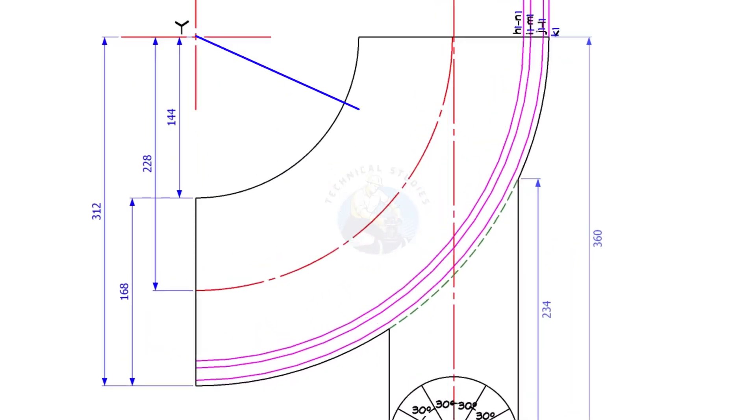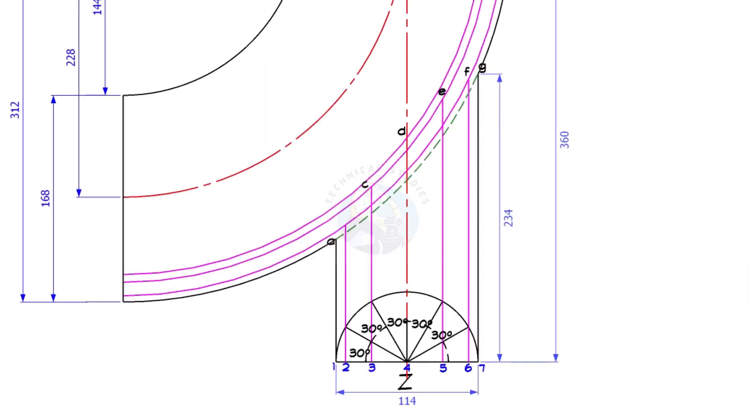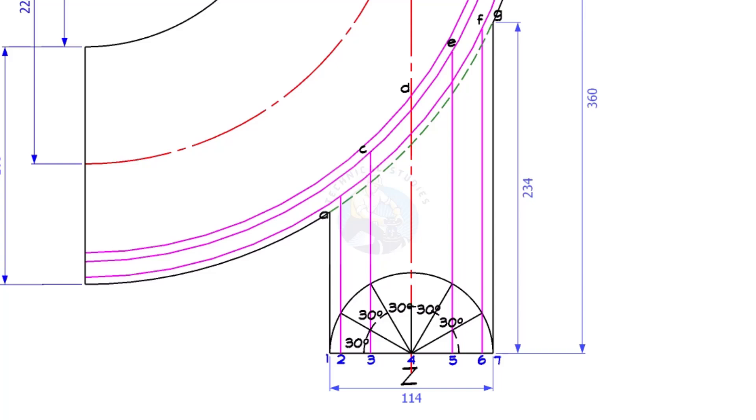Draw arcs centering Y as shown. Draw lines 6F, 5E, 3C, 2B, intersecting the arcs.